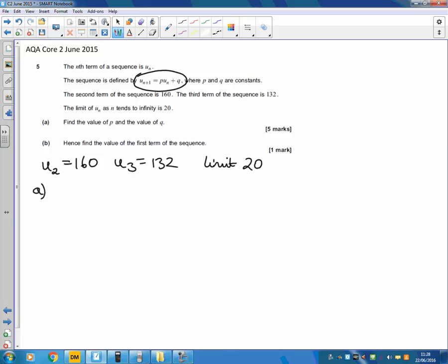Then the question asks to find p and q. We're going to use the information we've been given. We've got our formula for our sequence, our rule.